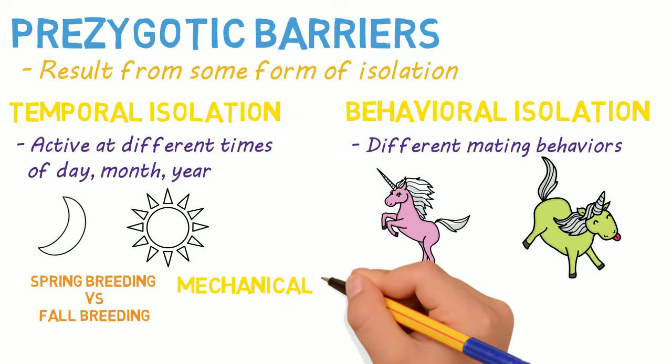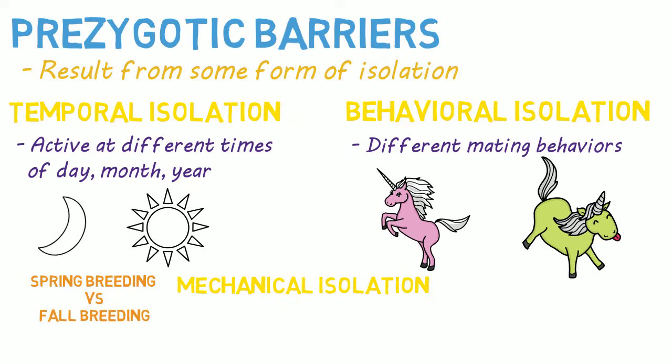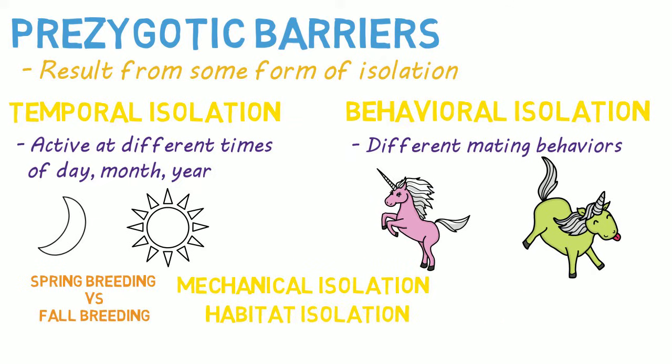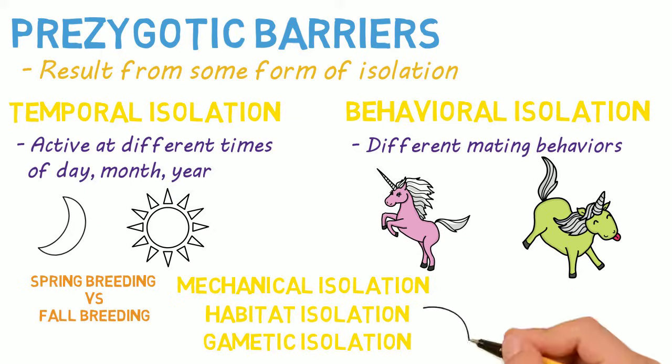Others include mechanical isolation, where some members physically can't mate with others; habitat isolation, where the habitat occupied by members of a species differs and thus breeding interactions differ; and gametic isolation, which occurs in aquatic animals. You can learn more about all of these by following the links in the description.